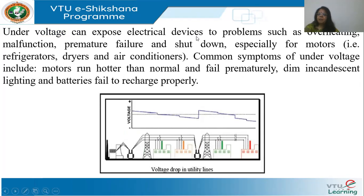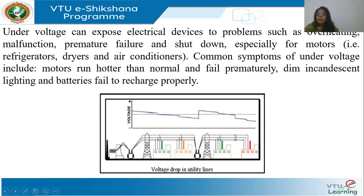Under voltage can expose electrical devices to overheating — if it's a constant power load, it may draw more current to maintain the same power (P is proportional to VI). Motors may malfunction, run hotter than normal, or fail prematurely. Incandescent bulbs will dim, and fluorescent bulbs may not come on at all. Capacitor banks can partially compensate, but voltage may still fall at long distances.